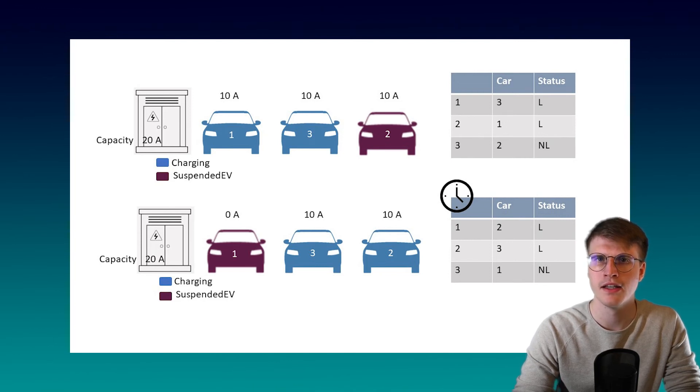The load management now tries to supply the min current of the car in the first place. Then it goes to the second place and tries to deliver the min current there as well. It does it until the station has no more current available. After a certain amount of time, the load management rotates through the list and redistributes the power across the cars. However, this also means that a certain number of cars will always be unable to charge. The rotation ensures that each car is temporarily charged piece by piece.